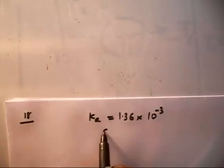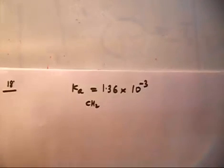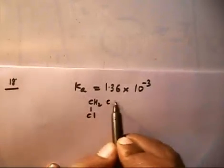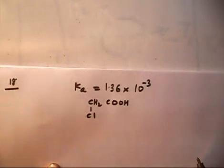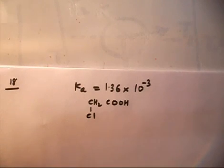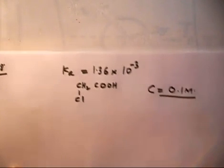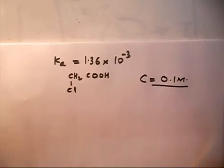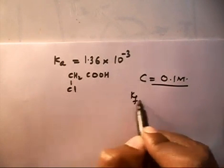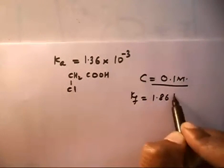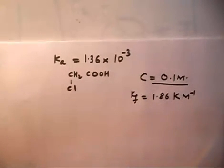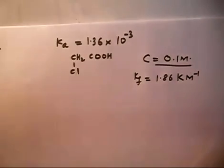Chloroacetic acid is CH₂Cl-COOH. We are given a concentration of 0.1 M. We have to calculate the concentration of each ion and the freezing point. The Kf for water is given as 1.86 K·mol⁻¹.